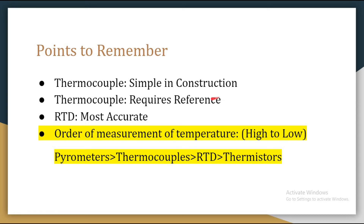If we talk about accuracy, RTD is the most accurate among RTD, thermistor, and thermocouple. An important point here is the order of temperature measurement from highest range to lowest range. If the temperature is very high, we go for pyrometers. If the temperature is lower, we go for thermocouples, then RTD, and finally for low temperature applications we go for thermistors. Remembering this order helps us choose the right temperature sensor for the application.